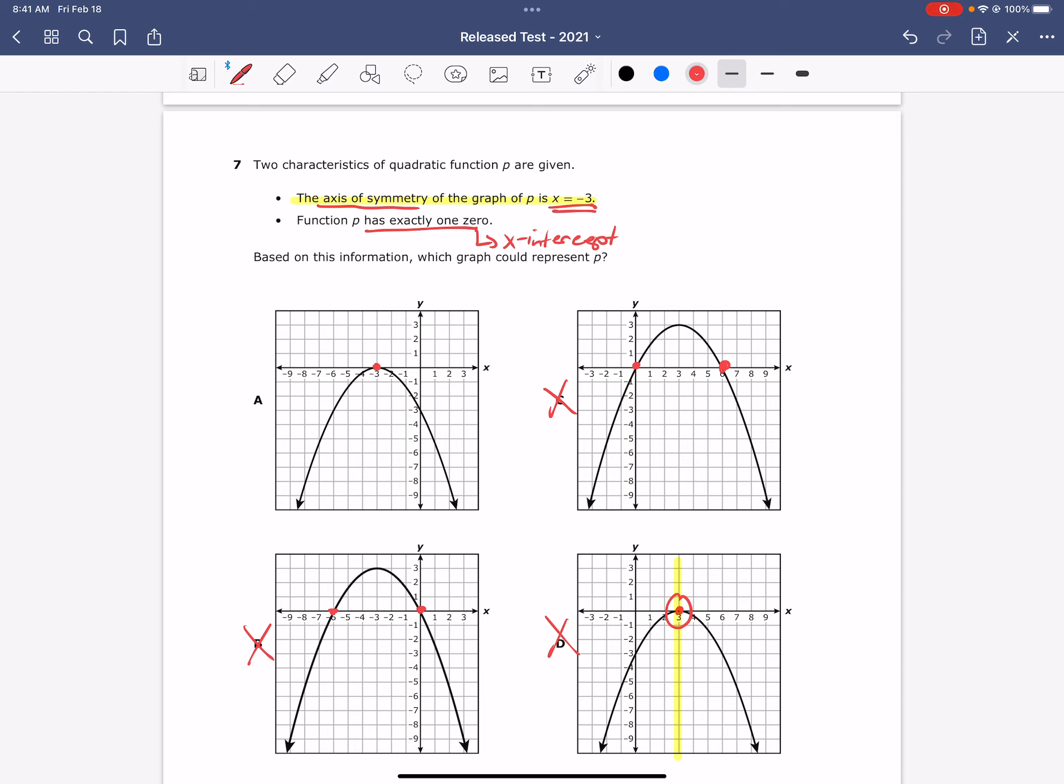So D is out of the running to be the correct answer. Notice that letter A has an axis of symmetry that cuts through that vertex, through that parabola to cut it into two equal parts, at x equals negative 3, which is exactly what we wanted for our problem. The answer to this question is letter A.